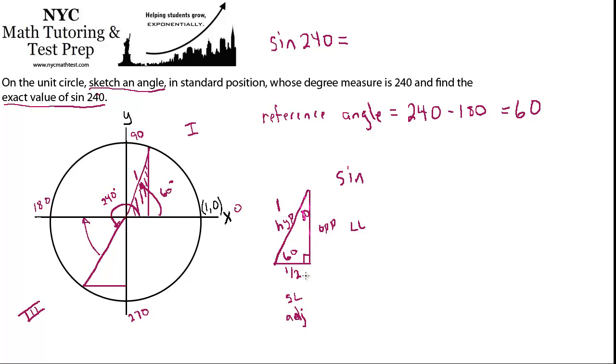So the longer leg is always the shorter leg times the square root of 3. So in this case, that's root 3 times 1 half, so root 3 over 2.